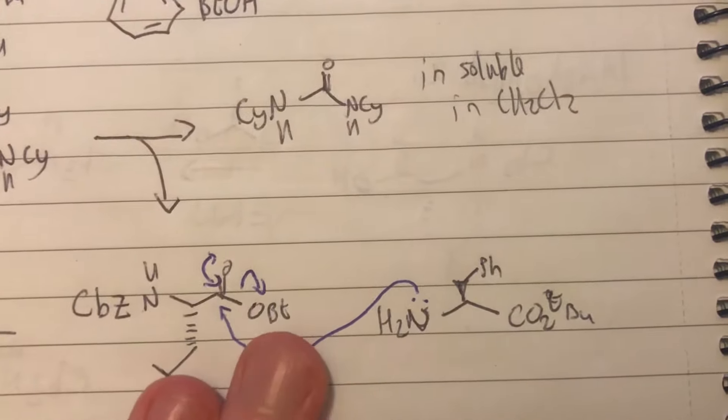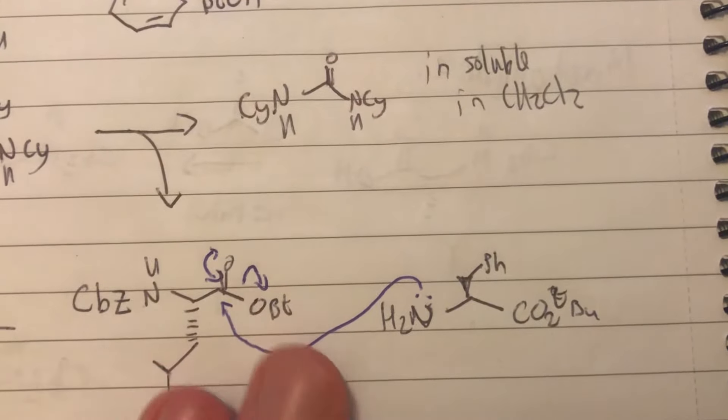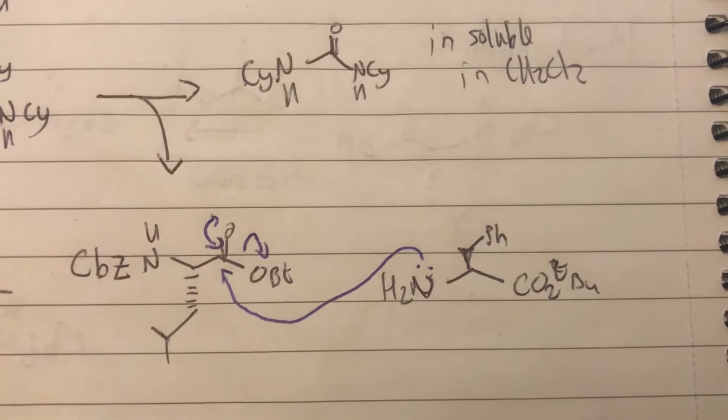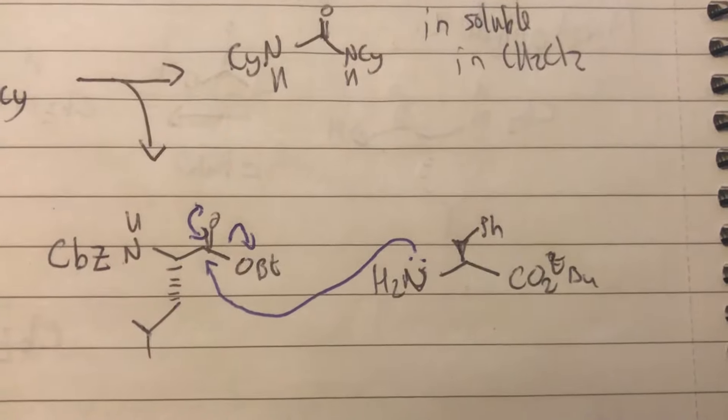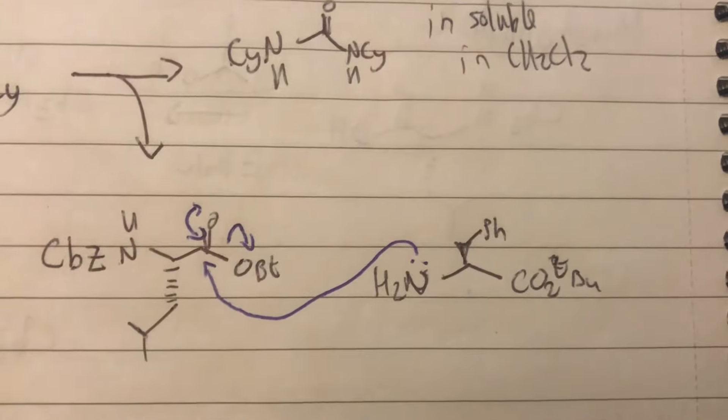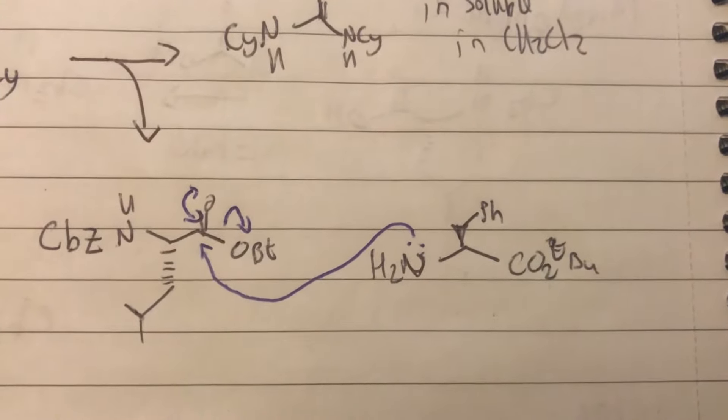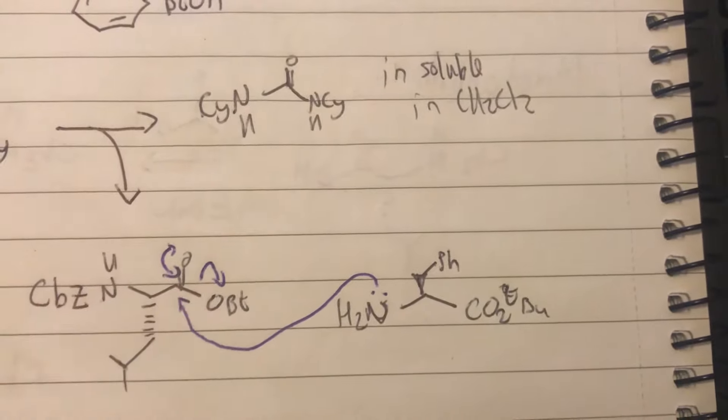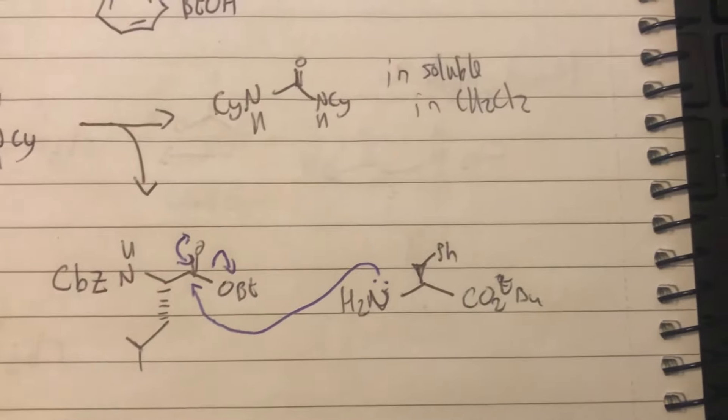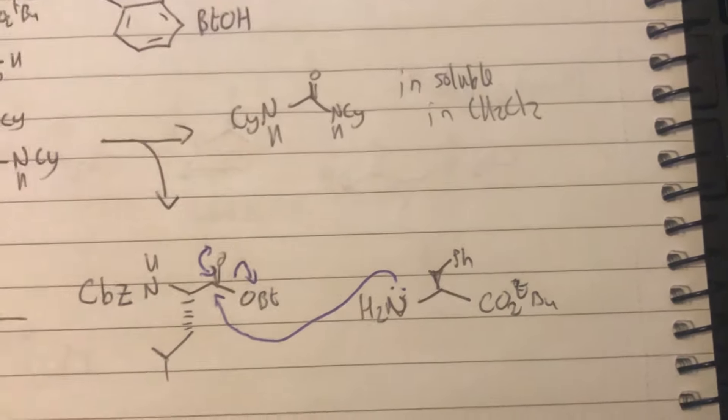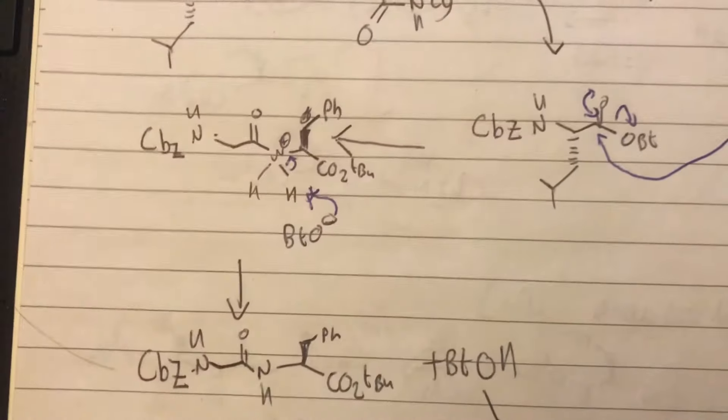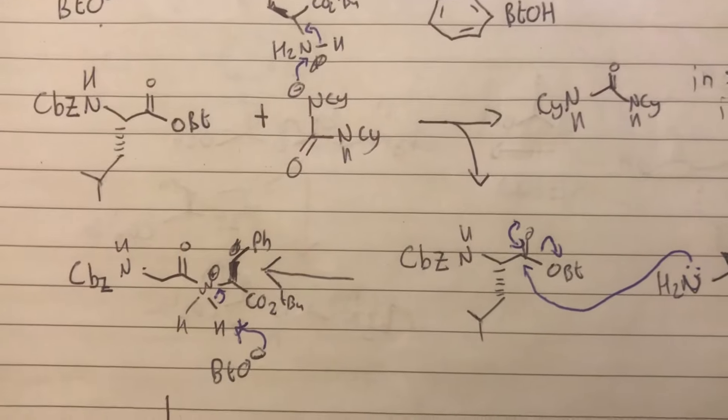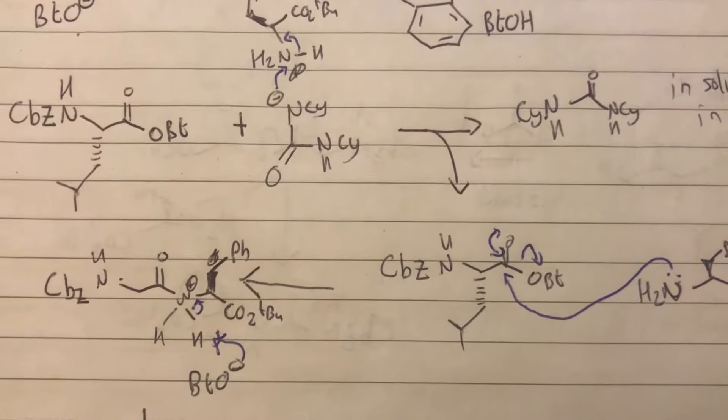Next step is we've basically got our two things now without the H. Literally all we've done is replaced OH with BTO. But this time the lone pair can attack the double bond oxygen instead, and that undergoes the same sort of mechanism we've seen where the electrons push onto the oxygen and push back down, and then that removes our OBT.